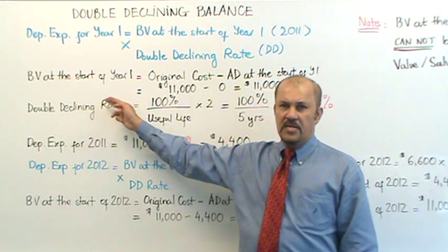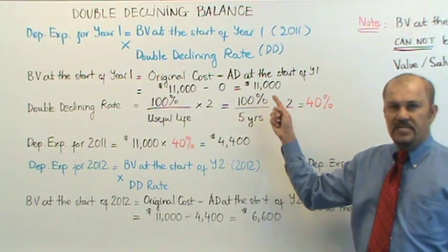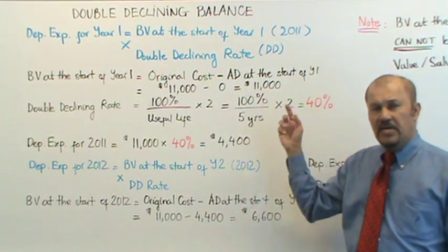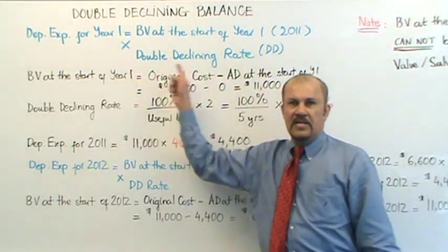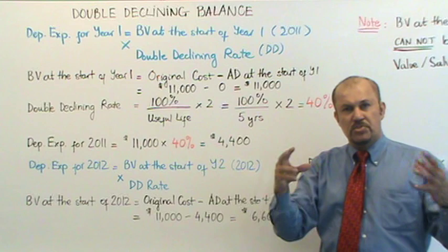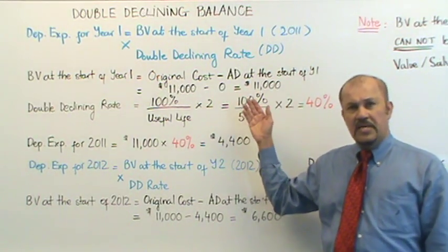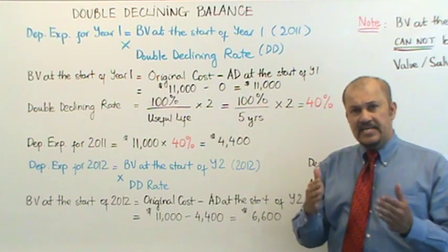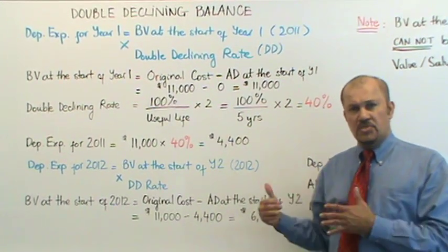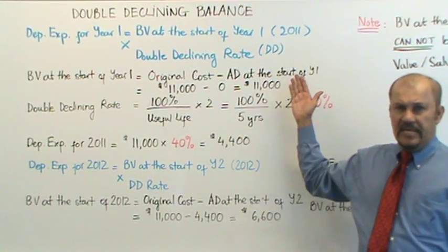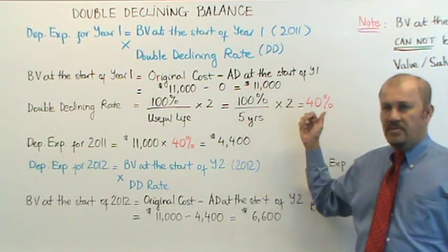Book value at the start of year one, 2011, is equal to the original cost minus accumulated depreciation at the start of year one. Note the similarity in time references — book value at the start of year one and AD at the start of year one. Your time references must coincide. Your AD at the start of year one is usually zero because if you think about it, AD at the start of year one means you've just bought the asset. From an accounting standpoint, when you just bought the asset, we don't take any depreciation on it for these calculation purposes.